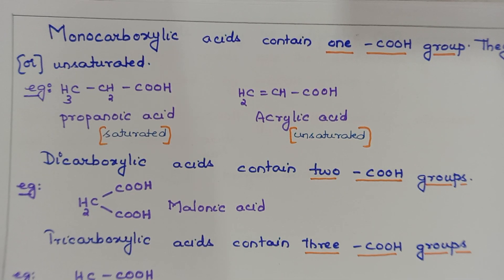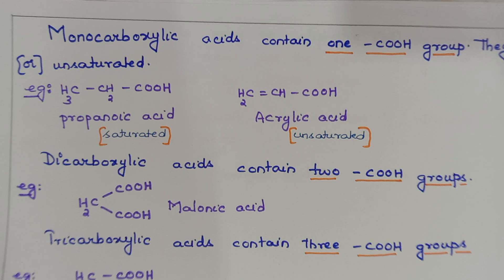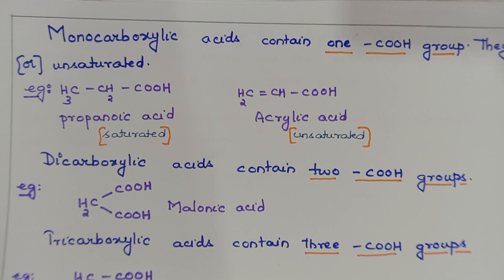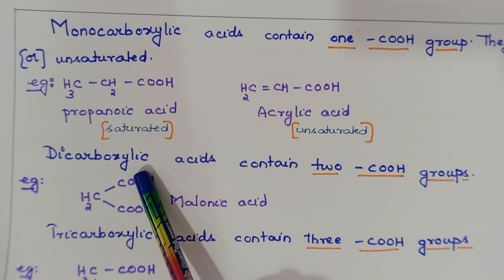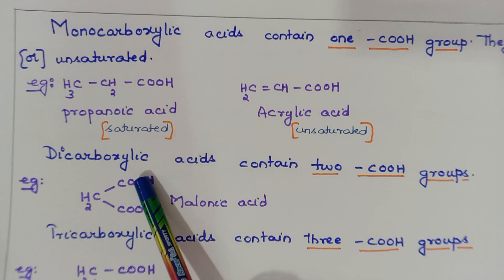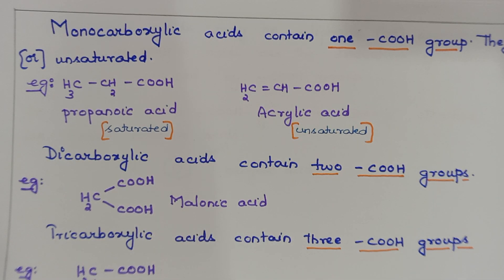A dicarboxylic acid contains two COOH groups. For example, CH2(COOH)2 has two COOH groups and is called malonic acid.